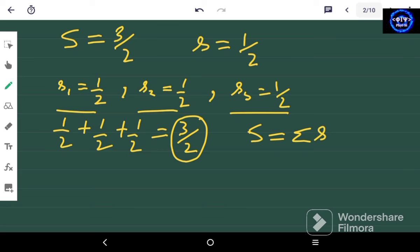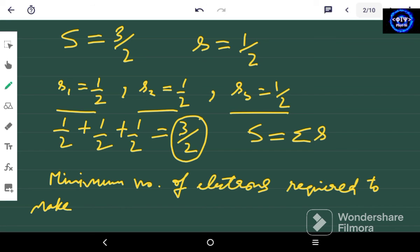So it means, the minimum value, the minimum number of electrons required to make this state, will be equal to 3.